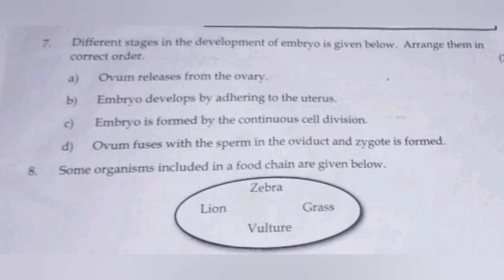Different stages in the development of the embryo are given below. Arrange them in the correct order. Answer: A. Ovum releases from the ovary. D. Ovum fuses with the sperm in the oviduct and zygote is formed. C. Embryo is formed by continuous cell division. B. Embryo develops by adhering to the uterus.